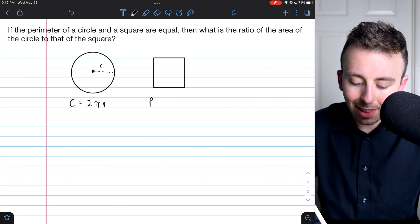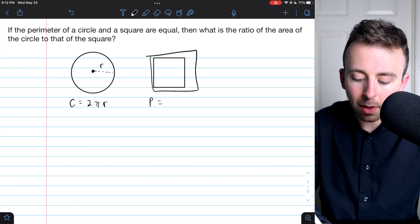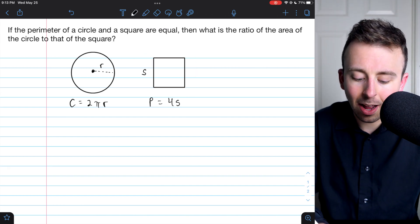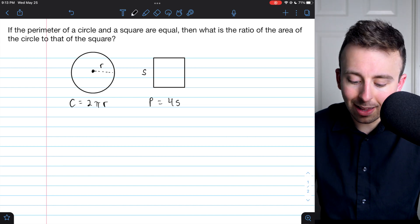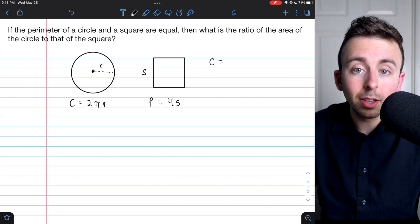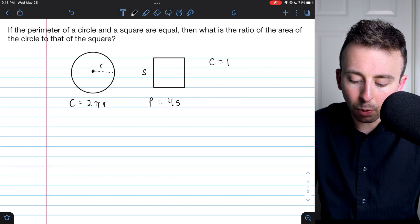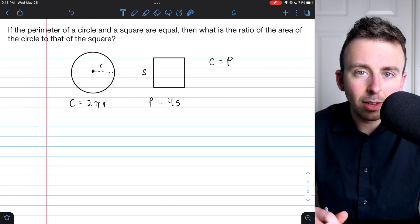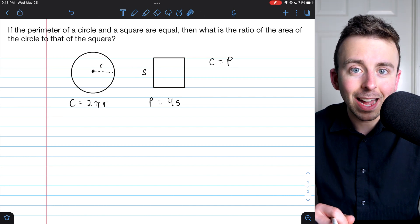And then we'll also write that P, the perimeter of the square, is 4s. That's 4 times the side length. And then, of course, in this problem, the circumference of the circle equals the perimeter of the square. And we need to use this information to find the ratio of their areas.